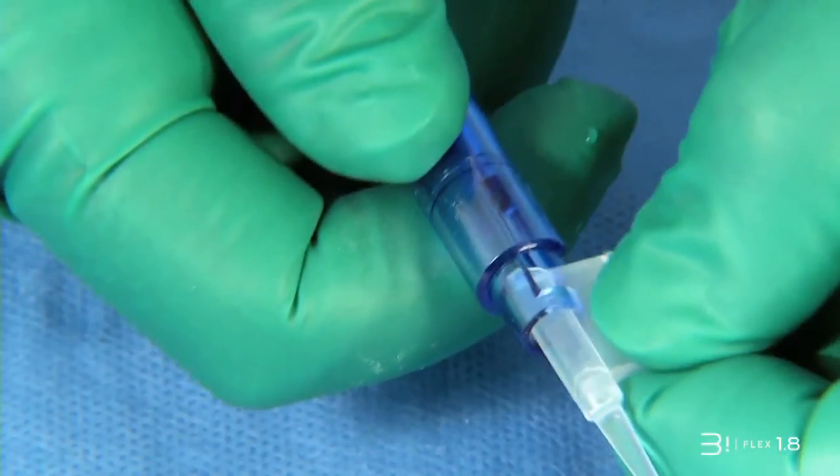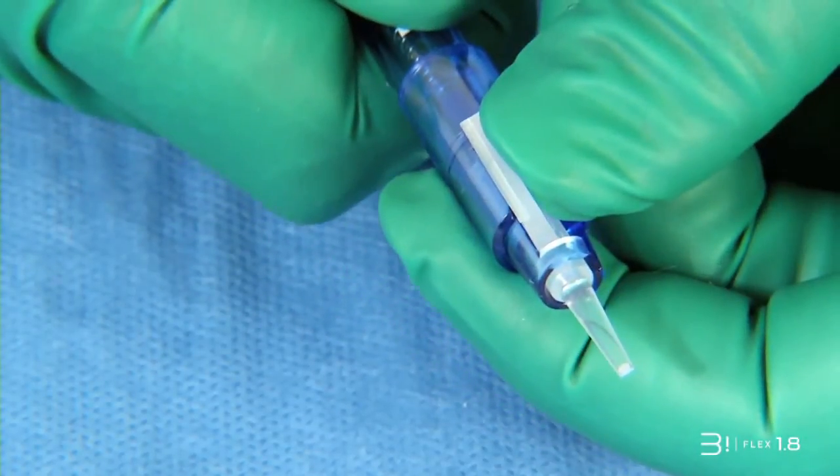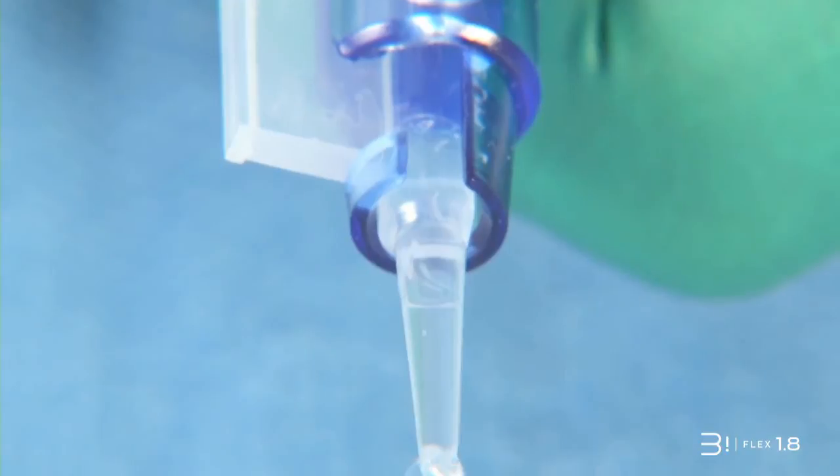Insert the cartridge into the injector. Check that the implant can move without any constraints within the cartridge before inserting the injector into the capsular bag for final withdrawal of the lens.